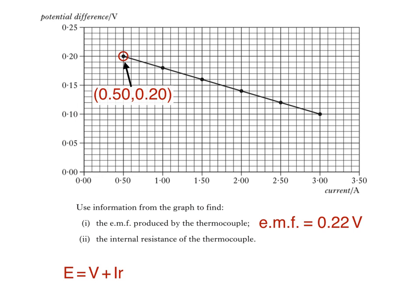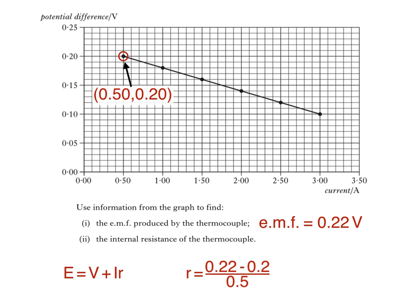Substituting these values into our equation gives us: 0.22 is equal to 0.2 plus 0.5r. Subtracting 0.2 from both sides, we get 0.5r is equal to 0.22 minus 0.2. We can then make internal resistance small r the subject of the equation by dividing both sides by 0.5. This gives us an answer of 0.04 ohms again. Remember that this method works with any point, as long as it's on the best fit line.